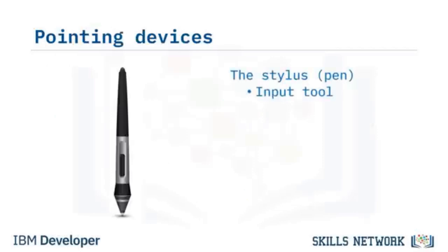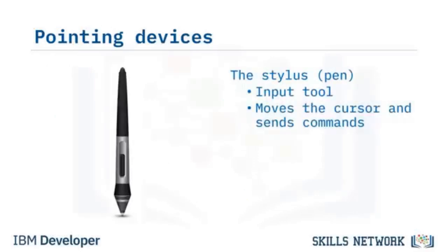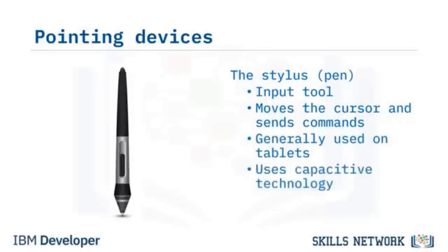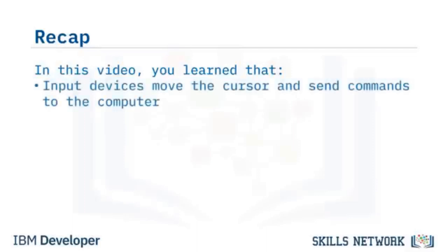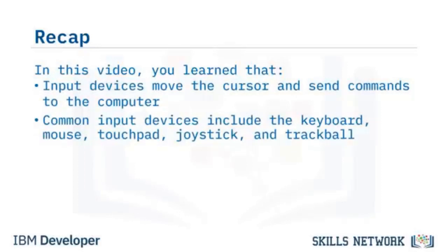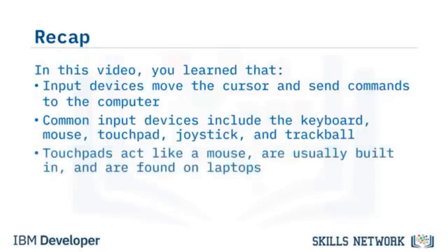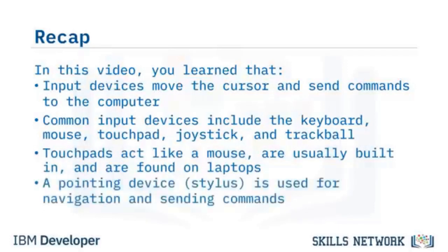A pointing device is a type of input tool used to move the cursor and send additional commands to the computer. A pointing stick, or stylus, is usually used on tablets. Most styluses work via capacitive technology based on heat and pressure — when you push the stylus onto the screen, it senses the heat and pressure and elicits a response. Common input devices include the keyboard, mouse, touchpad, joystick, and trackball.